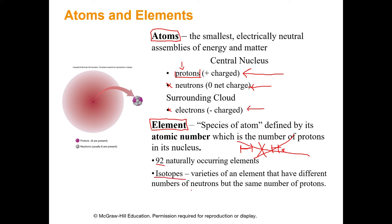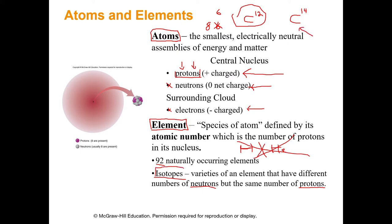Isotopes are varieties of an element that have different numbers of neutrons but the same number of protons. Carbon's atomic number is six, meaning it has six protons. Normally most carbon floating around in the world — in you, me, and the air — has six neutrons, so we call it carbon-12. That is an isotope of carbon. With carbon dating we're actually talking about carbon-14, which has eight neutrons.